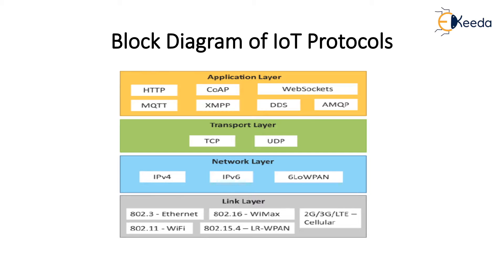Level two is connectivity — the communication and processing units. Level three is edge computing, which handles data element analysis and transformation, processing data from the physical device connected through communication and processing units. Level four is data accumulation — that is, storage of data for further processing. Level five deals with data abstraction, where the real analysis takes place through aggregation and accessing of data.